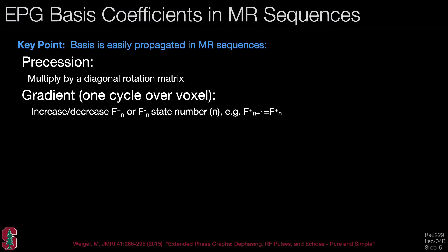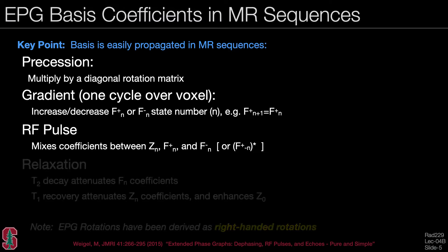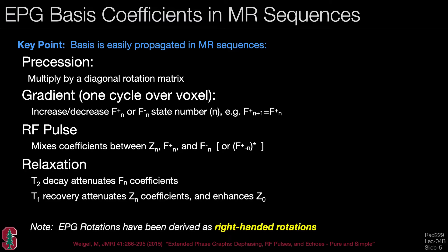Gradients, that is unit gradients of one cycle over a voxel, will simply shift the states between, say, F1 to F2. RF pulses will actually mix the coefficients of a given order n. Relaxation will apply T2 decay to attenuate the F coefficients, and T1 recovery will both attenuate the Z coefficients but also enhance the Z0 state.